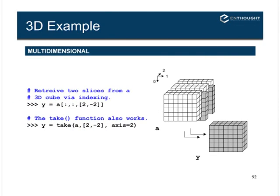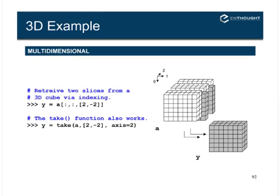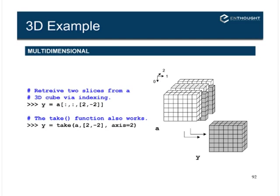Slicing operations work in three dimensions exactly the same way. Here we've created a three-dimensional array A — you can think of these as images or whatever you like. If you want all values along the zeroth index, all values along the first index, and then just the slice from index 0 to index 2 at the back, that will pull out those two arrays.